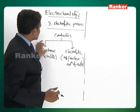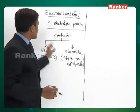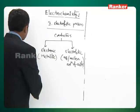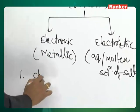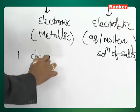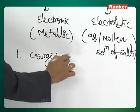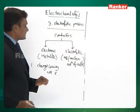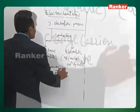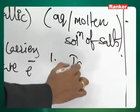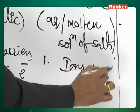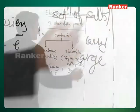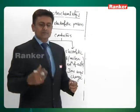Both are conducting electricity, so both are known as conductors. When it comes to metallic conductors, the charge carriers are the electrons. When it comes to electrolytic conductors, the ions carry the charge. This is the basic difference between these two.